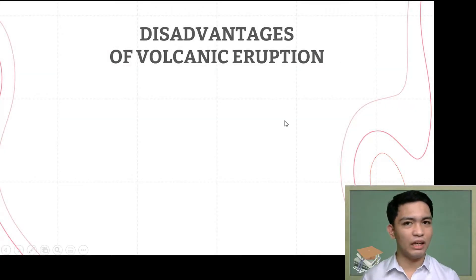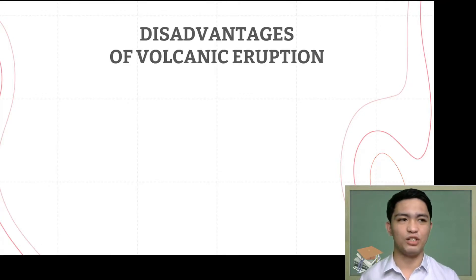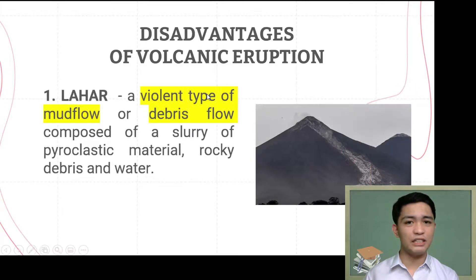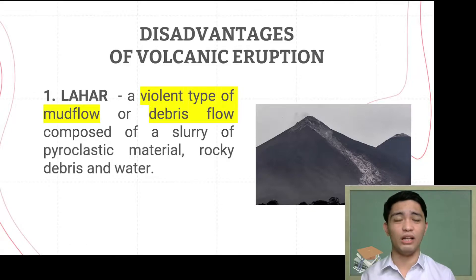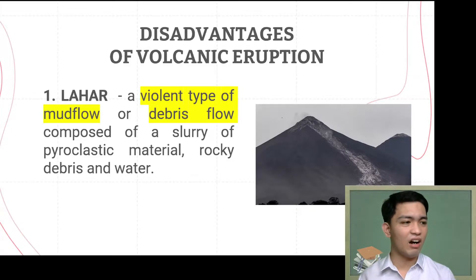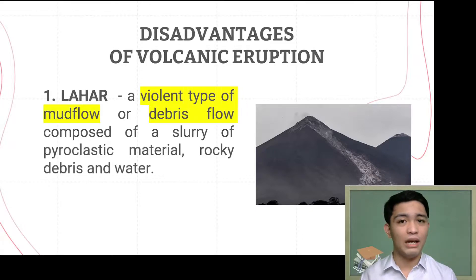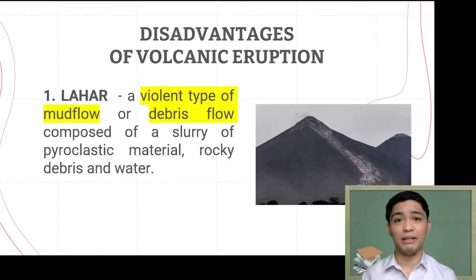Let's find out if what you have written matches what we have in the presentation. The first disadvantage of volcanic eruption is the occurrence of what we call lahar. A lahar is a violent type of mud flow — not a simple mud flow, but a violent debris flow composed of a slurry of pyroclastic material.